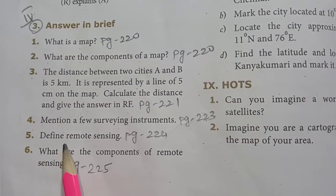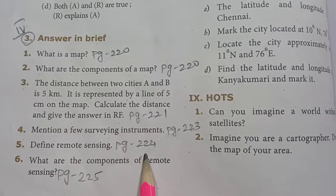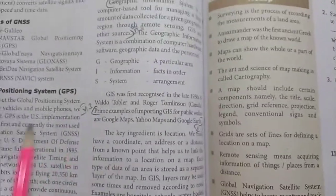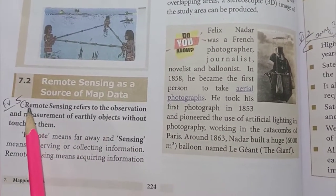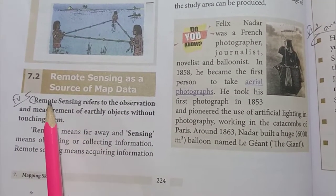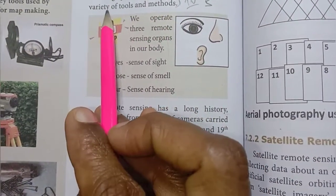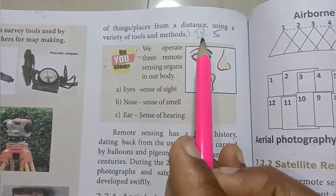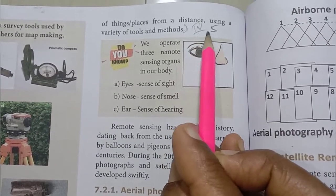Fifth one, define remote sensing. Page number 224. Remote sensing, that will start the three lines. Next remote means. Variety of tools and methods. Fourth Roman numeral, fifth one answer.